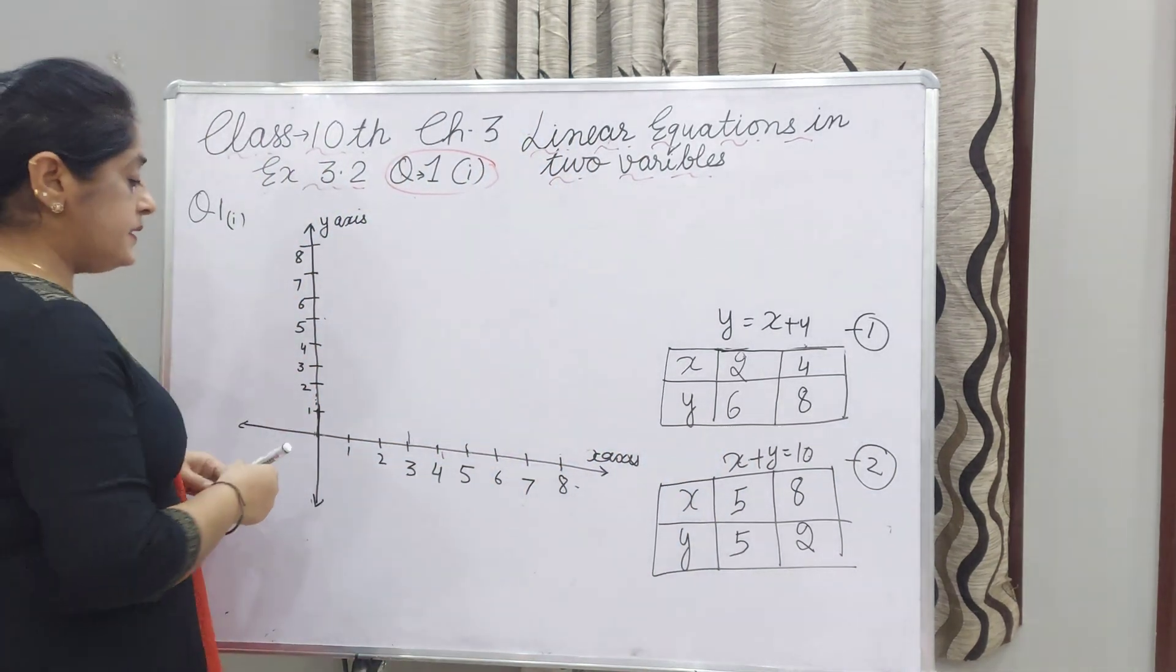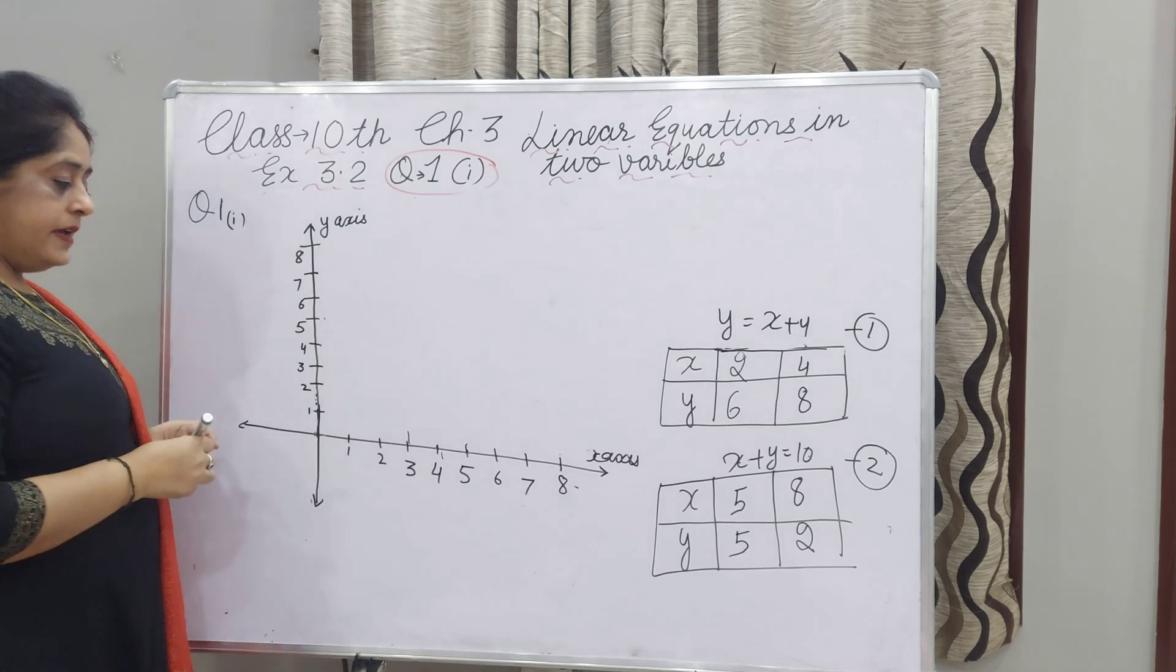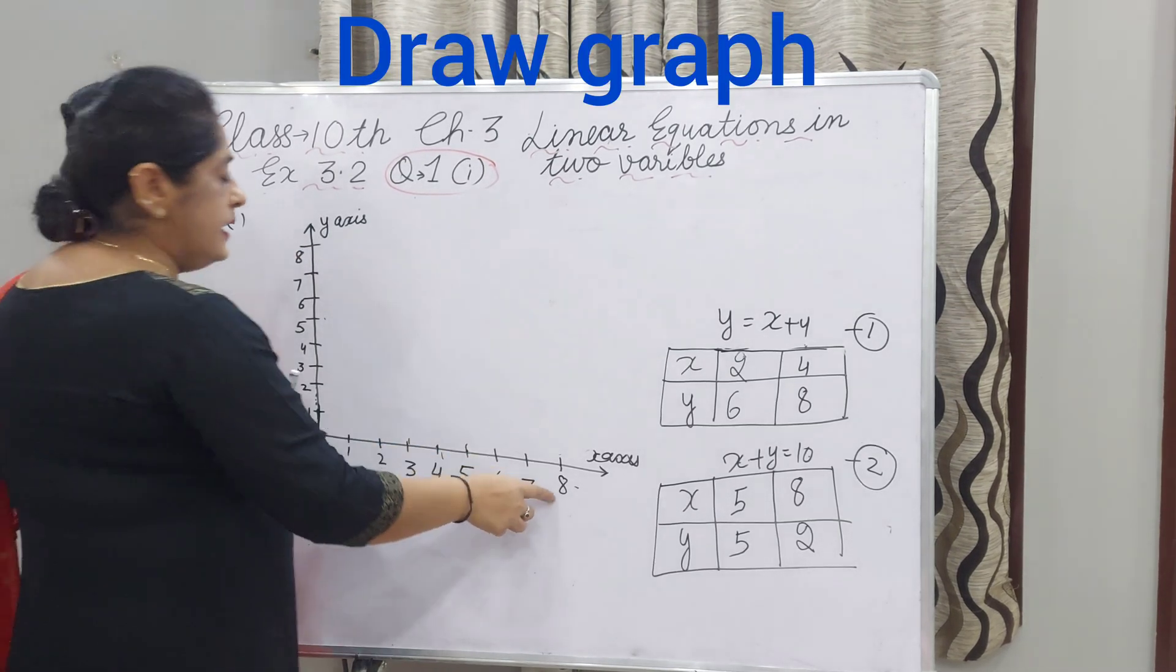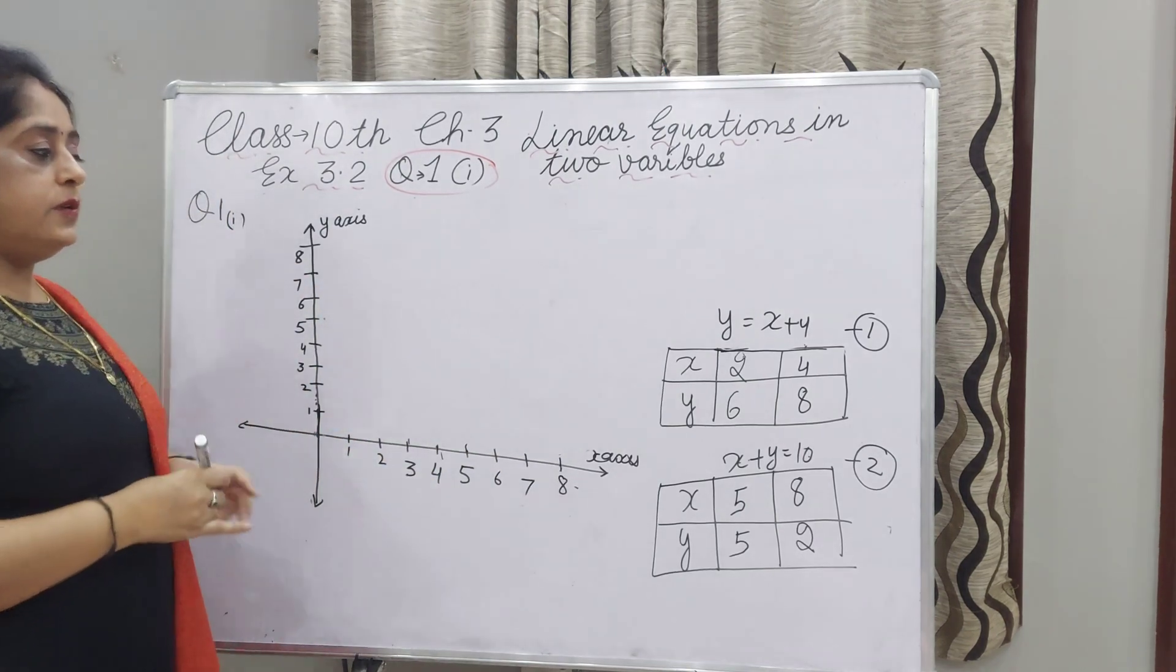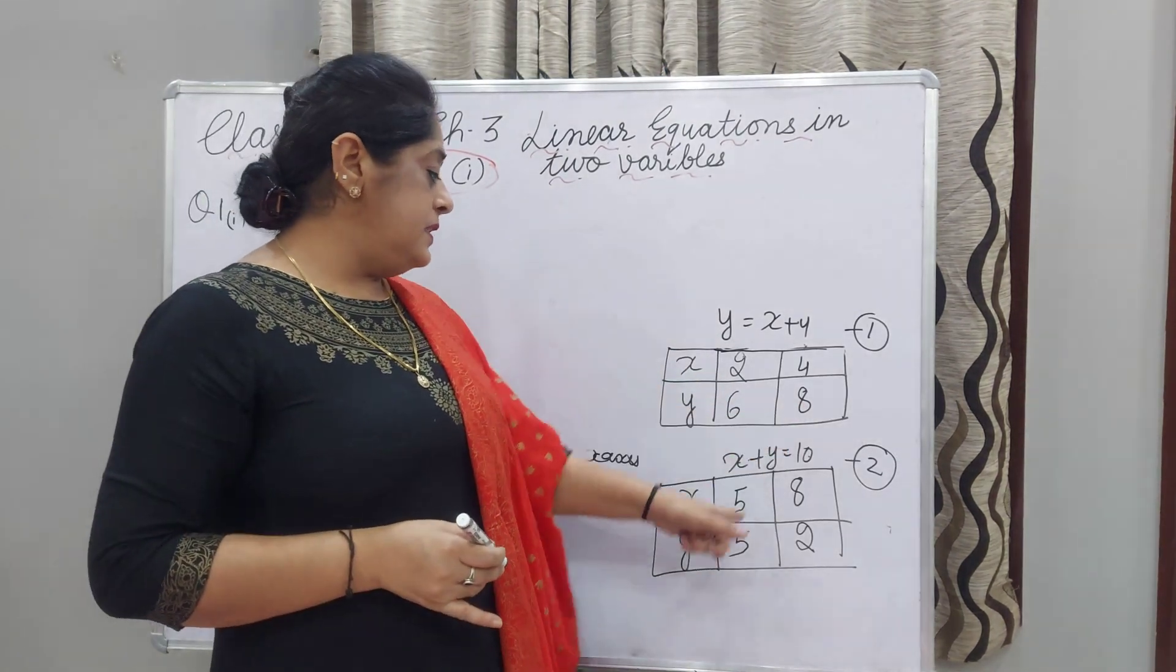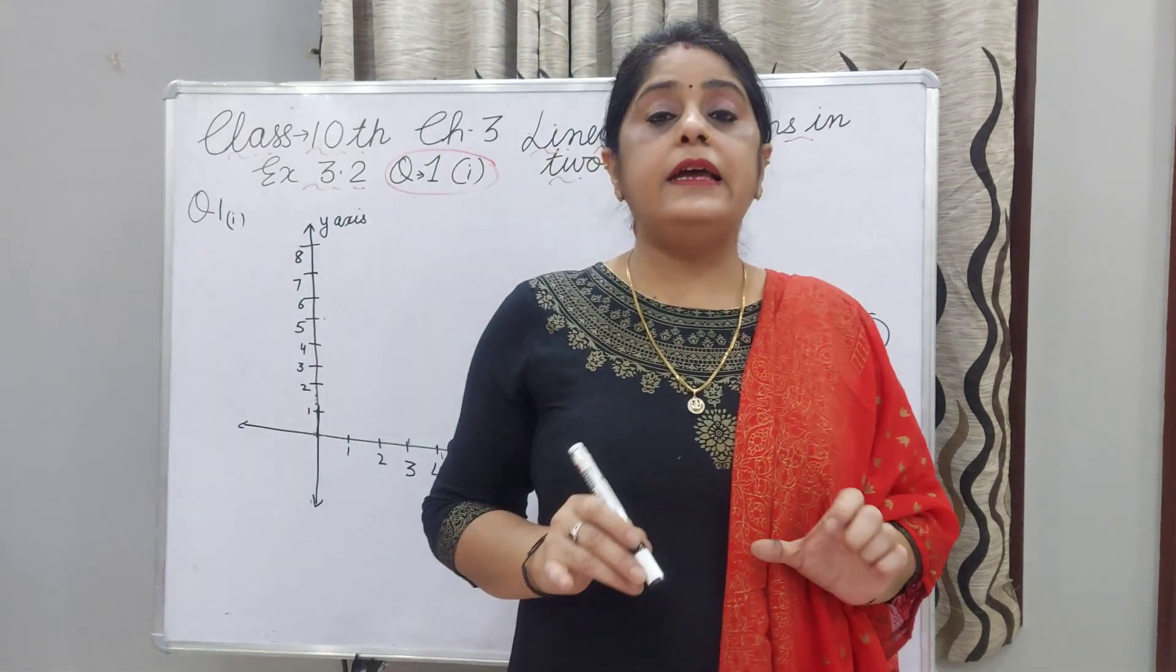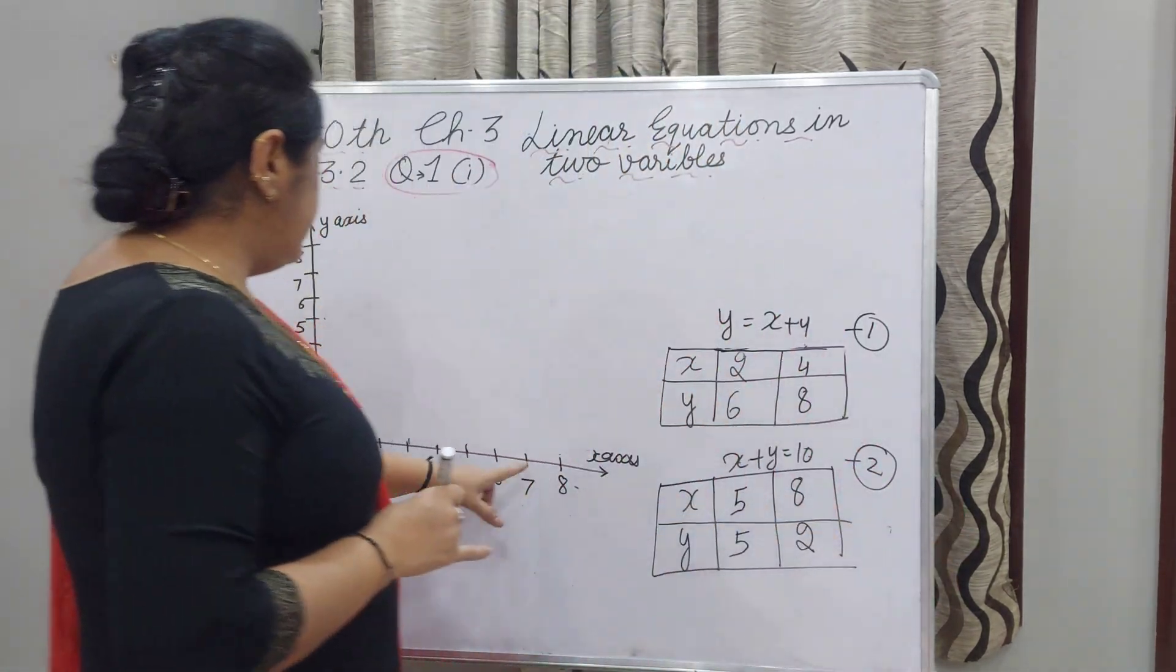Now I have drawn two axes, X axis and Y axis. The distance is the same on both. I have taken 1 to 8 on both axes because the maximum value of Y is 8 and the maximum value of X is 8.